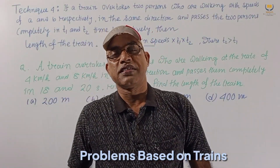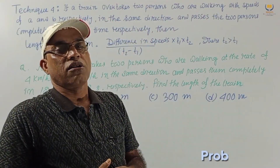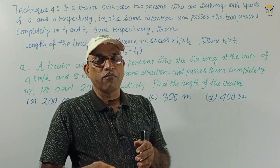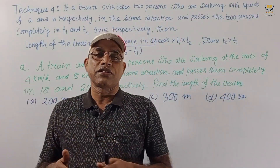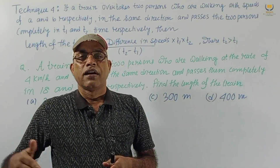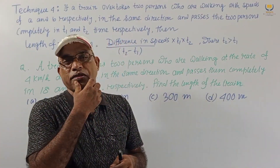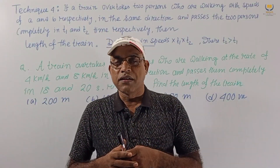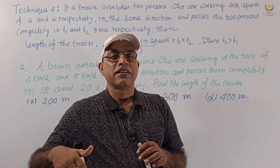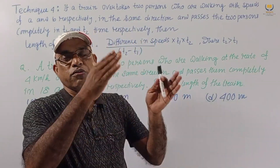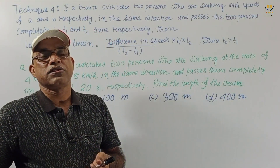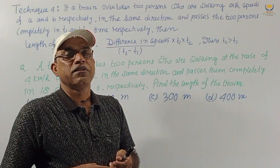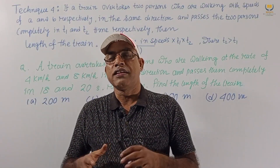Students, welcome to S Math Guru Classes. Our main problem is based on trains — a train moves in the same direction or opposite direction, and at a certain time the train overtakes a platform or two boys moving in the same direction. We want to find the length of the train or platform in these different scenarios.